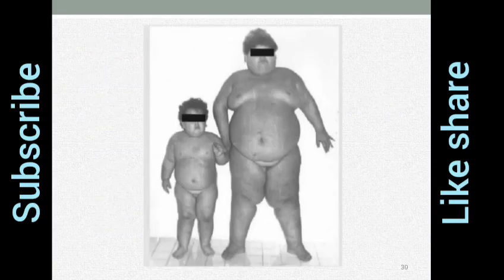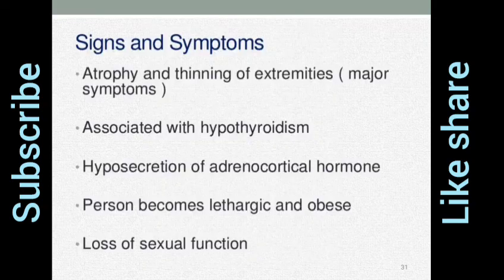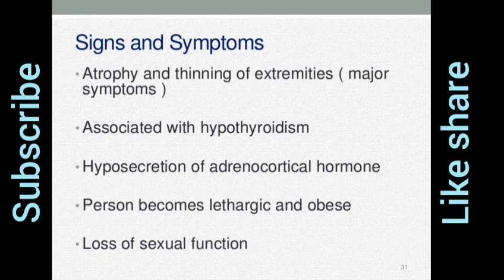Signs and symptoms of Acromicria: atrophy and thinning of extremities. Major symptoms are associated with hypothyroidism, hyposexualism, and adrenocortical hormone deficiency. Persons become lethargic and experience loss of sexual function.